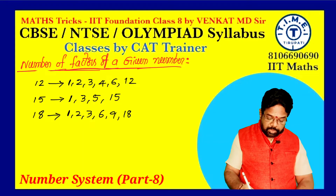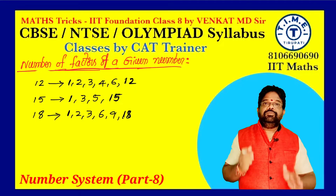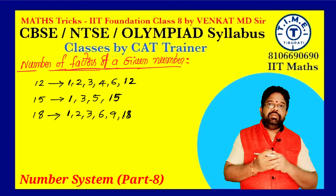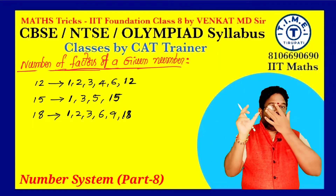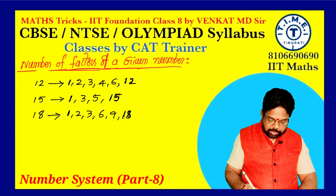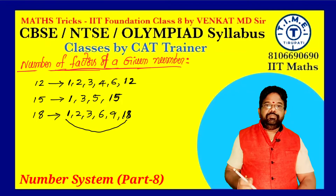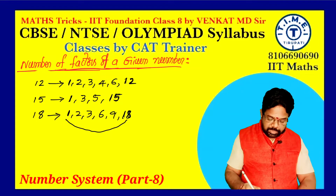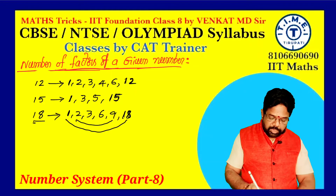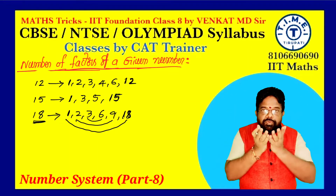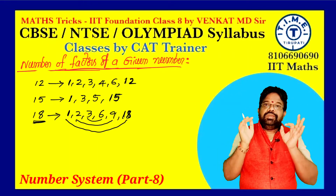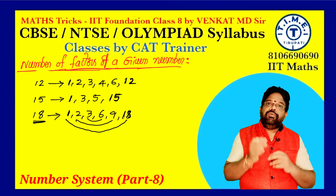Similarly, the last factor is the number itself — 12, 15, 18. The first factor is 1 and the last factor is the number itself. By taking the product of the first and last factor, we get the number again. For 18: 1 × 18 = 18. The second factor times the second-from-last factor also gives the number: 2 × 9 = 18, and 3 × 6 = 18. That is the nature of the factors.